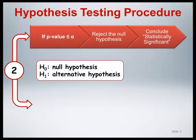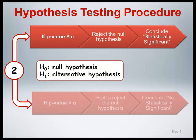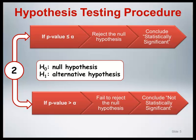The second step is to calculate the p-value and determine whether or not it is less than or equal to the significance level of the test. If the p-value is less than or equal to alpha, reject the null hypothesis in favor of the alternative hypothesis and conclude that the result is statistically significant. If the p-value is greater than alpha, fail to reject the null hypothesis and conclude that the result is not statistically significant.